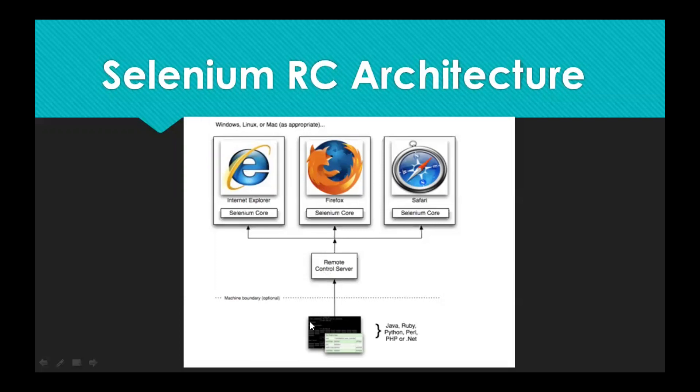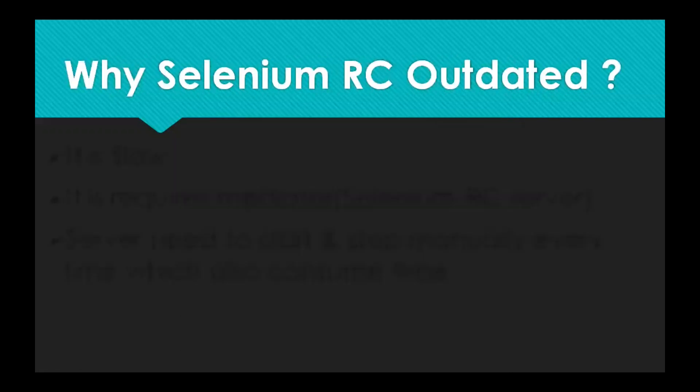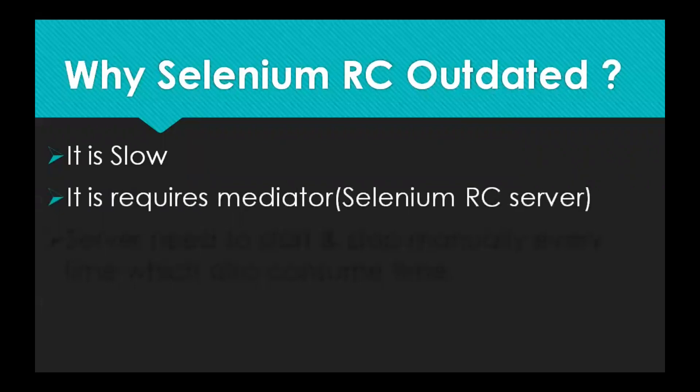So you might have guessed why Selenium RC is outdated. The reason is it is slow. Why is it slow? It requires a mediator — the Selenium RC server. The request goes from Eclipse to the RC server first, then it goes to the browser, and the application status comes back to the RC server first, then to Eclipse. So it acts as a mediator — that is one reason.